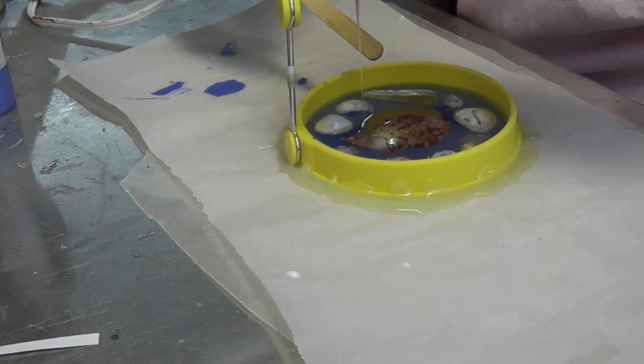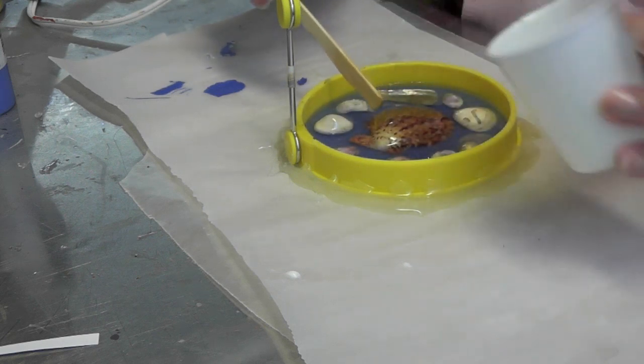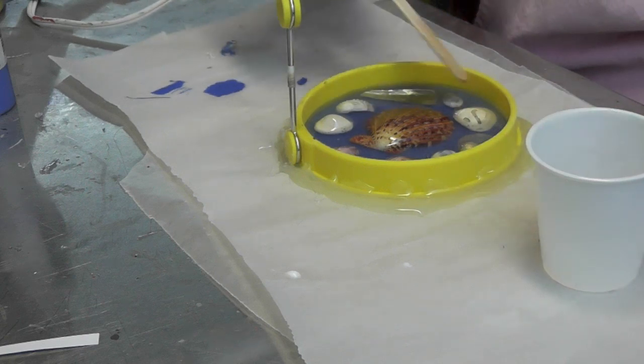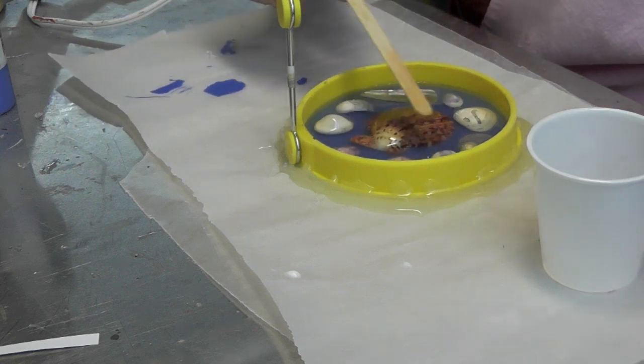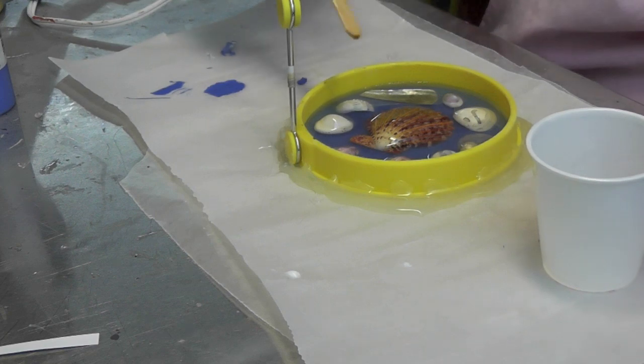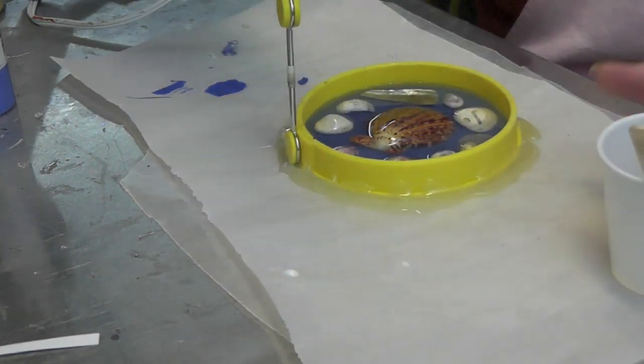And I'll probably need to make a little bit more. So then as the bubbles come up, you can get rid of them either by blowing on the resin with a straw or by using a lighter. So either one will work, so keep doing that periodically after you get all of your resin in there. And then we'll check back in the morning and see how it all turned out.